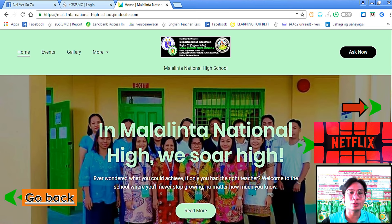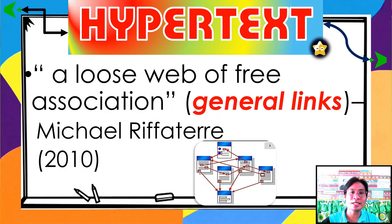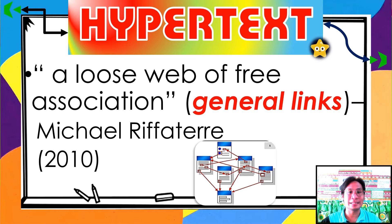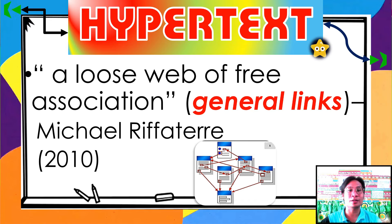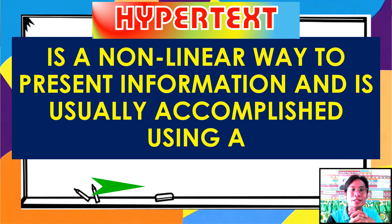There is a red arrow here. By clicking the red arrow, we proceed to the topic. Under context of text development, hypertext is the first technique. Hypertext is a loose web of free association of general links, according to Michael Ripaterre in 2010. It is usually created by links between information so the reader may jump to further information about a specific topic over the internet. Hyper means beyond or extreme. Hypertexts characterize the external links embedded in a text by a writer. Information is connected semantically from one text to another. Hypertext is a nonlinear way to present information, usually accomplished using a link. Let's use the hypertext technique by clicking the word 'link.'